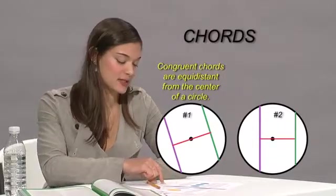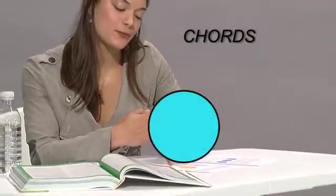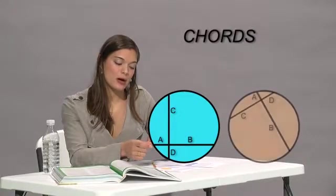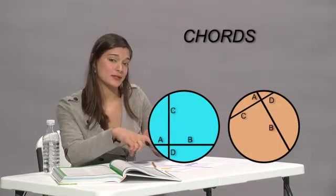The green is farther apart from the center than the purple one. If we have two chords intersecting in a circle, that means that the two segments, the product of them is going to be equal to the product of the other two segments.